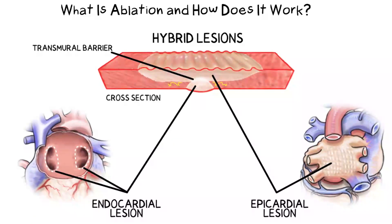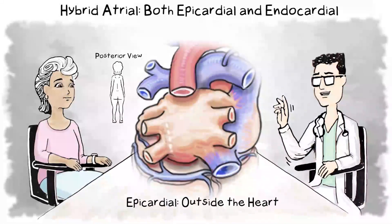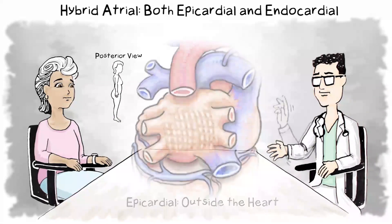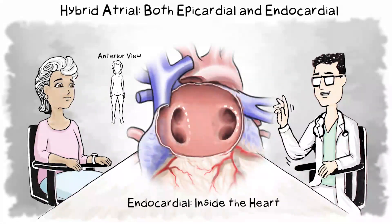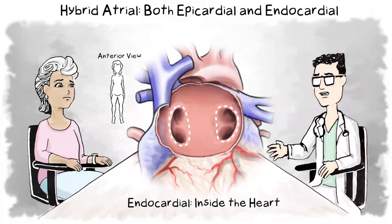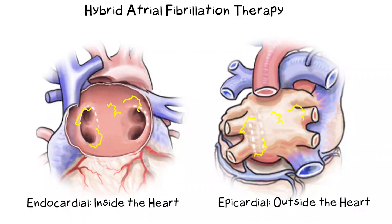There are two types of ablation. Epicardial ablation creates a lesion on the outside of the heart. Endocardial ablation creates a lesion on the inside of the heart. However, it is difficult to penetrate all the way through heart tissue — transmural — when treated from just one side. That is why the hybrid atrial fibrillation therapy option exists, which combines both epicardial and endocardial ablation, creating lesions on both the inside and outside of the heart.